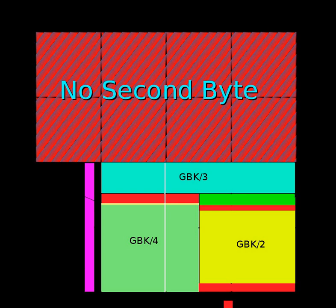Instead, codes are allocated sequentially with the first byte containing the most significant part and the last the least significant part, only to Unicode code points that are not mapped in any other manner.